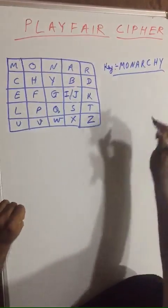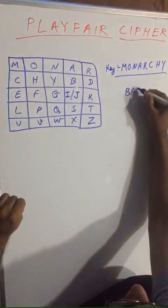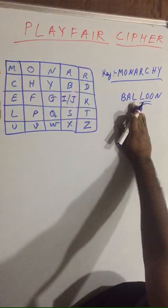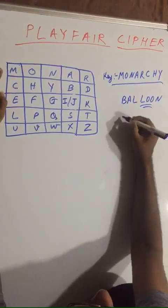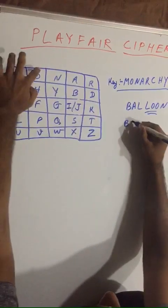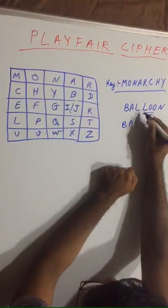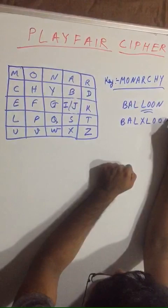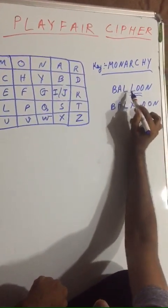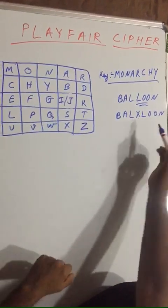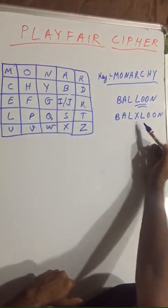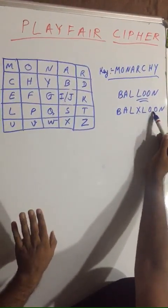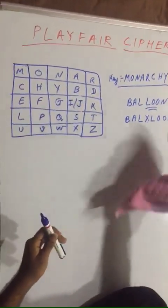Rule number three: suppose the given key is 'balloon' instead of 'monarchy'. While placing 'balloon' in the matrix, you put B, A, L — and between the two L's you insert X, then the second L, then O — and between the two O's again insert X — then N. Whenever you come across two similar consecutive letters, you put the alphabet X in between.